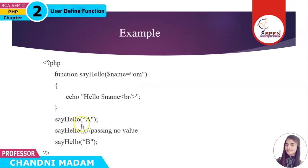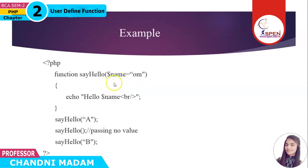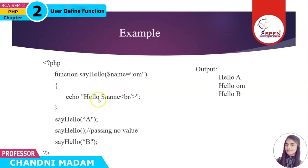The first time we call sayHello and pass the argument 'a', it does not take the default value — it takes the name variable value as 'a', so it prints 'hello a'. The second time we call sayHello without passing any argument, so it takes the default value 'ohm' and the output is 'hello ohm'. The third time we pass 'b' as the argument, so it prints 'hello b'. The output summary: first call prints 'hello a', second prints 'hello ohm', third prints 'hello b'.